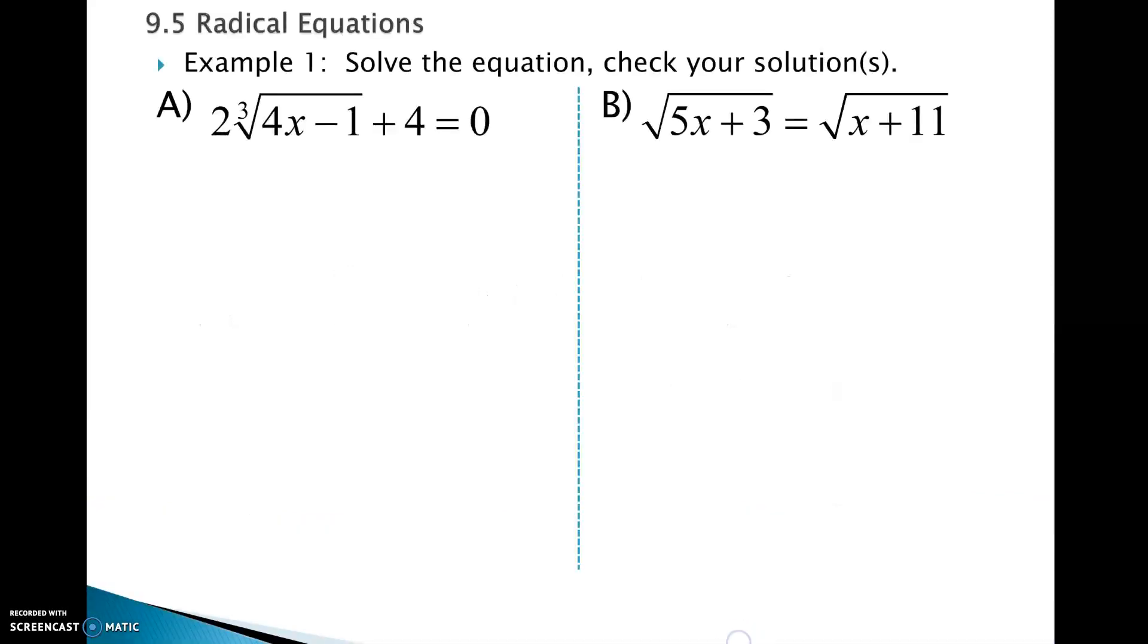Today we are going to solve radical equations. Here's our first example. Your first step is always going to be to isolate the radical. That means get the radical on a side by itself with nothing extra around it. So in example 1a, we're trying to get this cube root thing by itself. Our first step would be to subtract 4 on both sides. That will give us 2 times the cube root of 4x minus 1 equals negative 4. And then how do you suppose we would get rid of this 2 that's multiplied in front? Divide by 2.